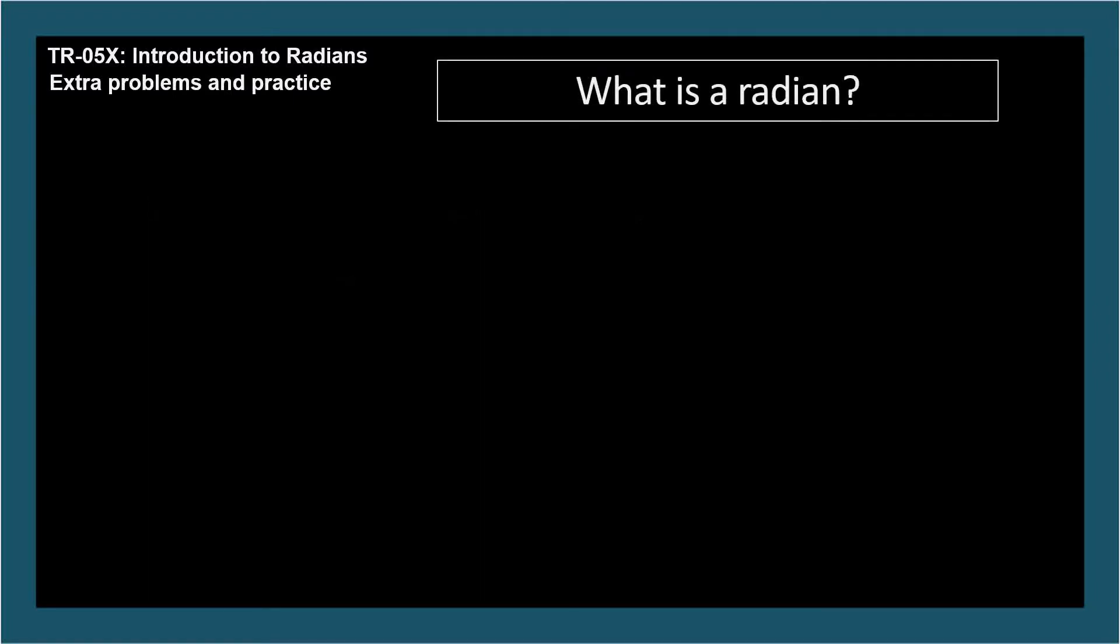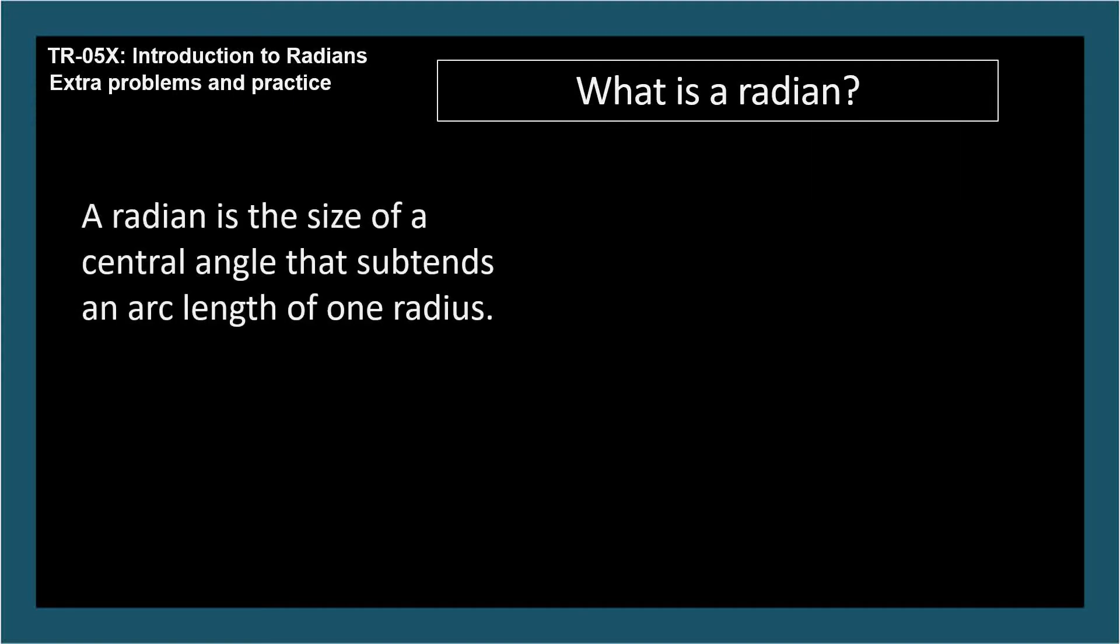So, what is a radian? A radian is the size of the central angle that subtends an arc length equal to the radius.